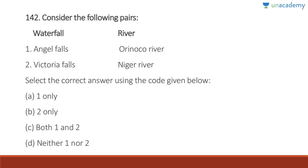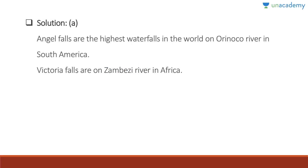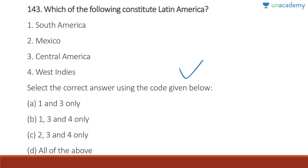Question 142: Angel Falls are on the Orinoco River — correct, they are the highest waterfalls in the world in South America. Victoria Falls are on the Zambezi River in Africa — this pair is wrong as stated. Answer is A, one only. Angel Falls are the world's highest uninterrupted waterfalls at almost one kilometer, on the Orinoco River in South America. Victoria Falls are on the Zambezi River in Africa.